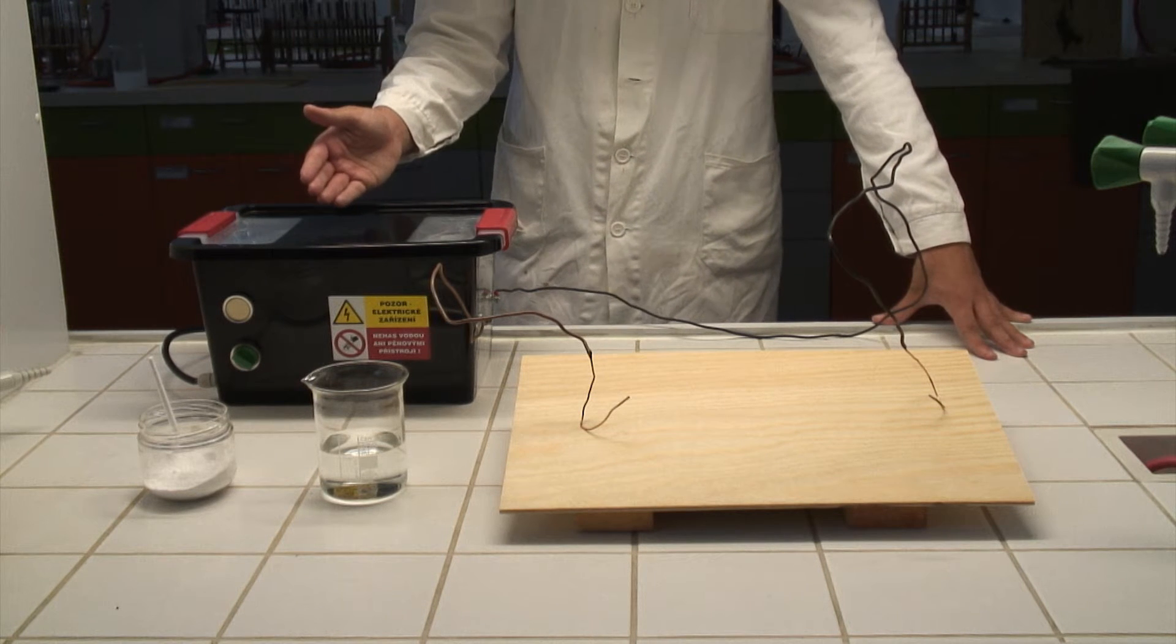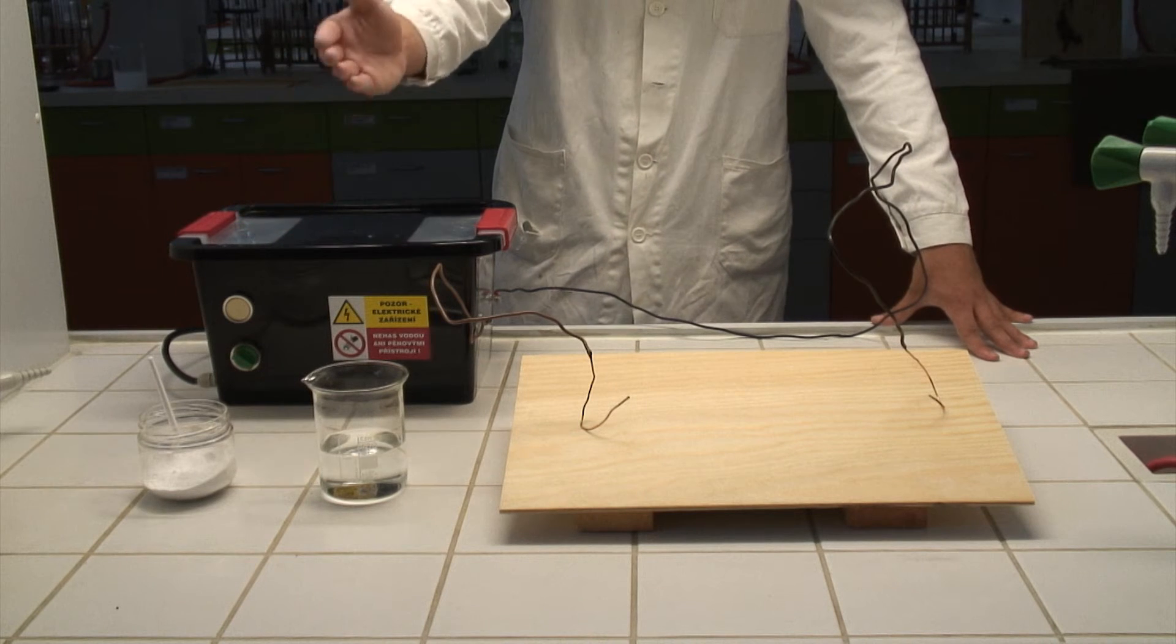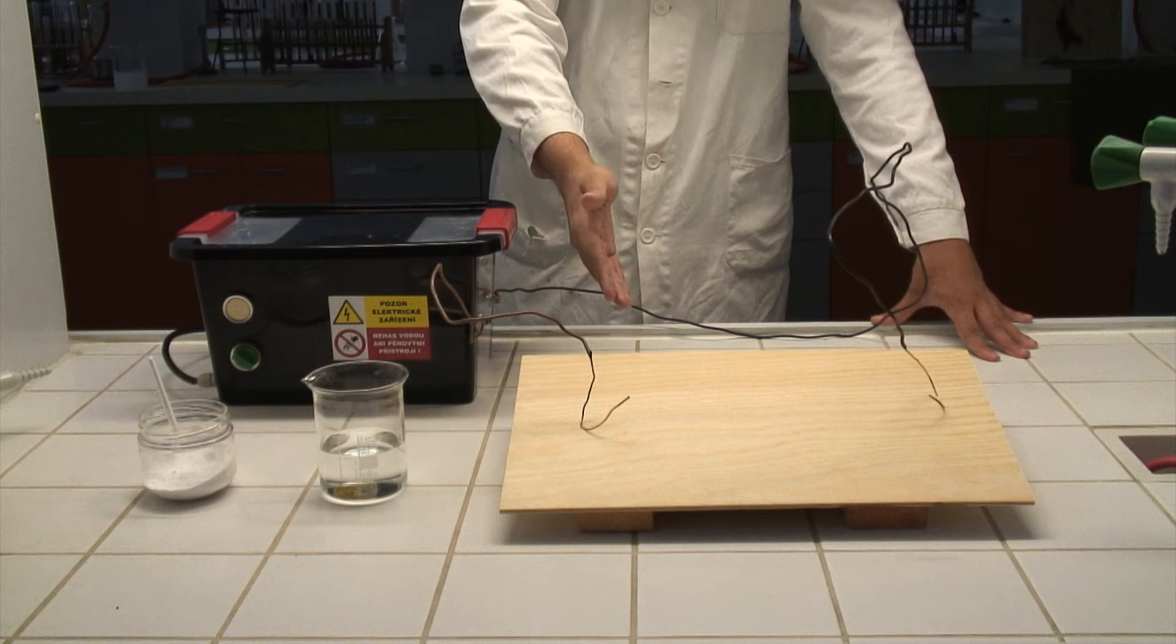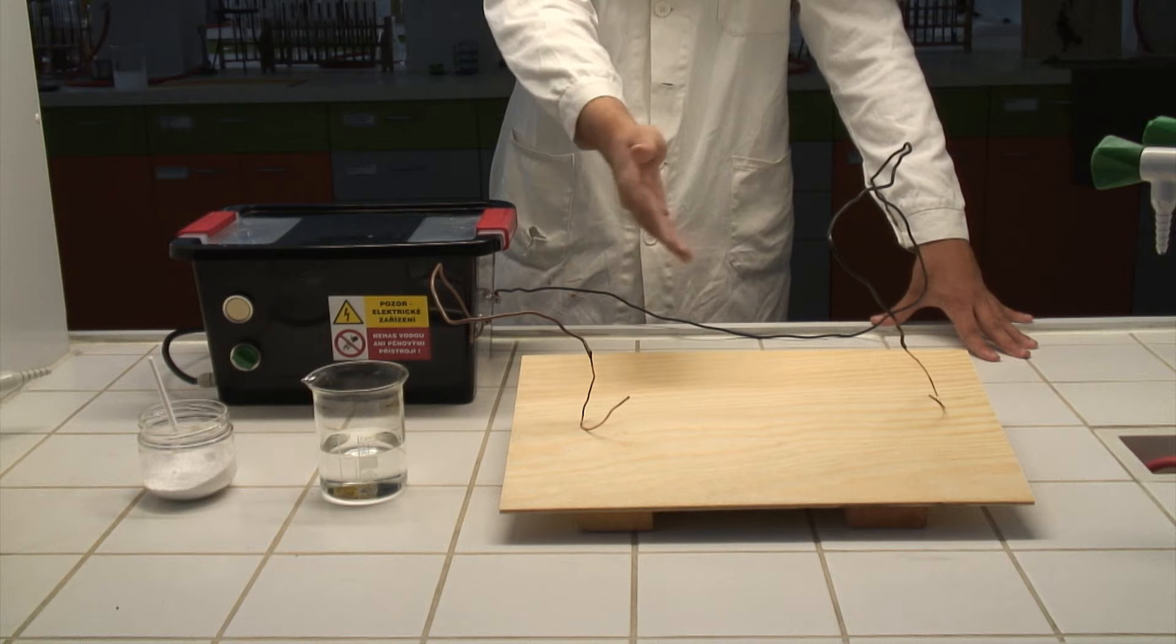We're going to need a source of high voltage, some baking soda, clear tap water and a wooden board with two attached electrodes.